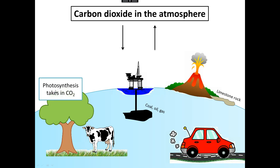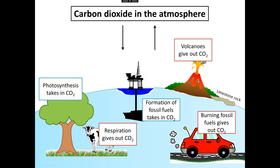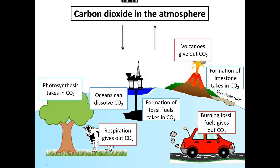Here come the answers. Photosynthesis takes in carbon dioxide from the atmosphere. Respiration of all living things gives out carbon dioxide into the atmosphere. Formation of fossil fuels like crude oil, coal and natural gas actually takes in carbon dioxide from the atmosphere, but the burning of fossil fuels like petrol and diesel gives out carbon dioxide. Volcanoes give out carbon dioxide. Formation of limestone rock takes in carbon dioxide. Carbon dioxide can also be taken out of the atmosphere by oceans — the water can dissolve carbon dioxide. And that is all seven ways.